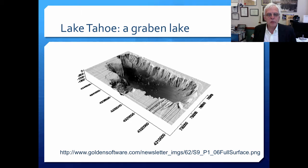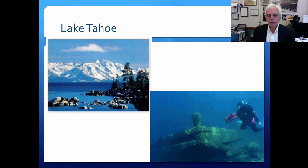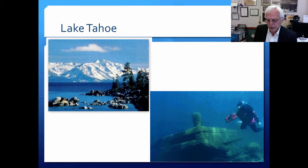Here you can see Lake Tahoe — a lovely photograph showing the incredible clarity of the water, with visibility in the range of about 20 meters. In spite of its isolation, it's still undergoing very gradual eutrophication, but has very steep sides. You can find videos on YouTube of people in submarine vehicles studying Lake Tahoe — a fascinating lake with a limnological institute on the shore.